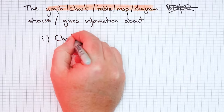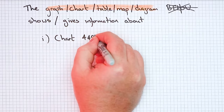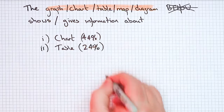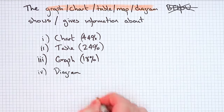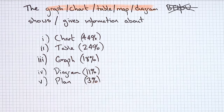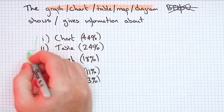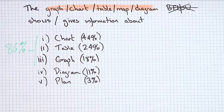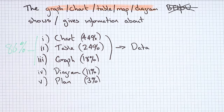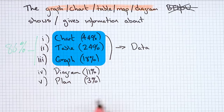I'm going to rank these by how common they are. Chart appeared in 44% of questions, table 24%, graph 18%, diagram 11%, and plan 3%. So these make up 86% of what you will get on test day. The good news is all you have to do is change bar chart, line graph, table, pie chart — whatever it is — to 'data.' They all mean data.